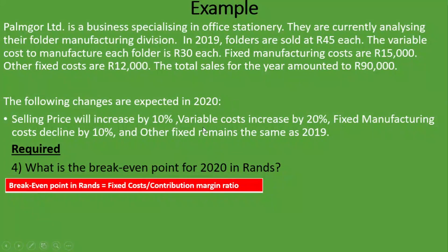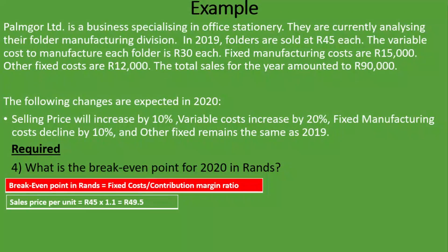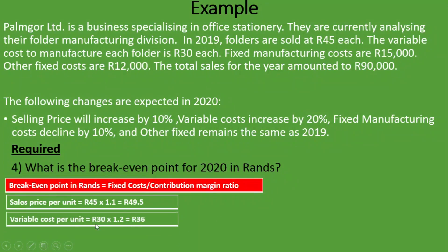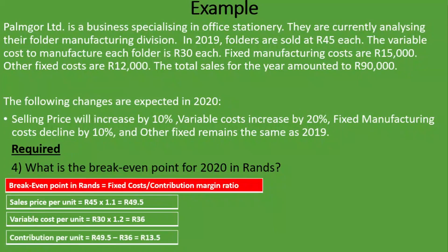The selling price will increase by 10%, so the new sales price per unit equals R45 times 1.1, giving us R49.50. The variable cost per unit was R30 in 2019, but in 2020 it increases by 20%, so it's R30 times 1.2, giving us R36. The contribution per unit equals the selling price per unit minus the variable cost per unit: R49.50 minus R36, giving us a contribution per unit of R13.50.